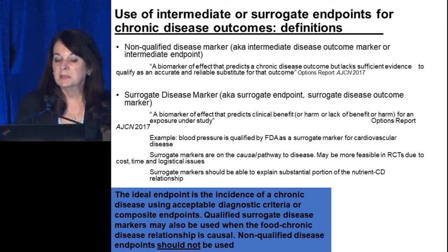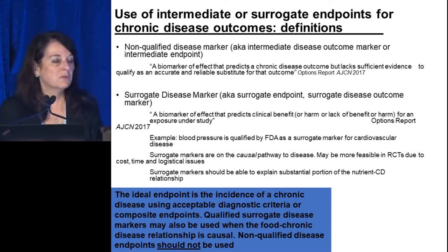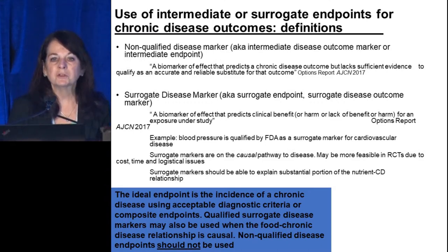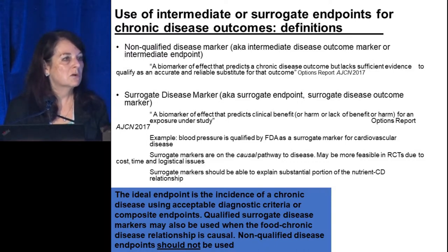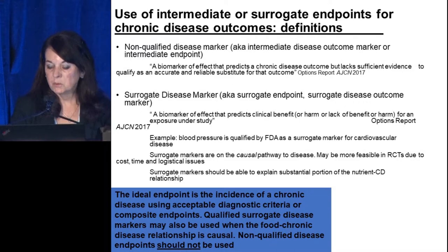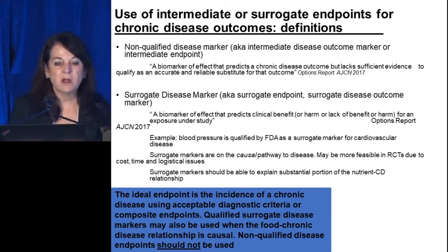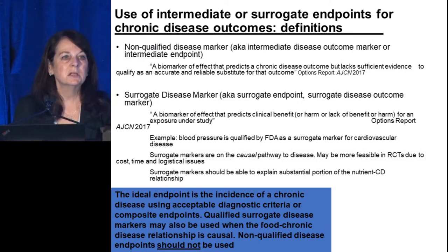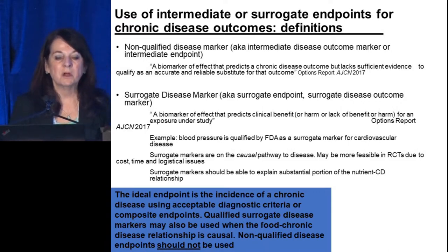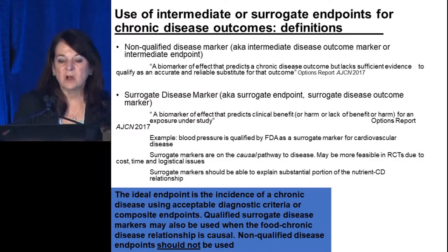Surrogate markers are on the causal pathway to disease and may be more feasible in randomized controlled trials due to cost, time, and logistical issues — most randomized trials are four to five years. Surrogate disease markers should be able to explain a substantial portion of the nutrient-to-disease relationship. The ideal endpoint is the incidence of chronic disease using acceptable diagnostic criteria or composite endpoints. Qualified surrogate disease markers may also be used when the food-to-disease relationship is causal. The committee determined that non-qualified disease endpoints should not be used.